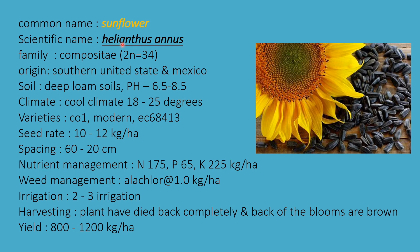The next oil crop is sunflower. Scientific name is Helianthus annuus, family Compositae. Chromosome number 2n = 34, origin southern United States and Mexico. Deep loamy soils are best suitable, pH 6.5 to 8.5. Climate is cool, 18 to 25 degrees. Varieties are CO1, Modern, and EC 68413. Seed rate is 10 to 12 kg per hectare, and spacing is 60 × 20 cm row to row and plant to plant.